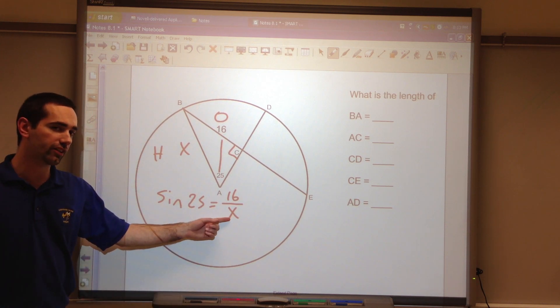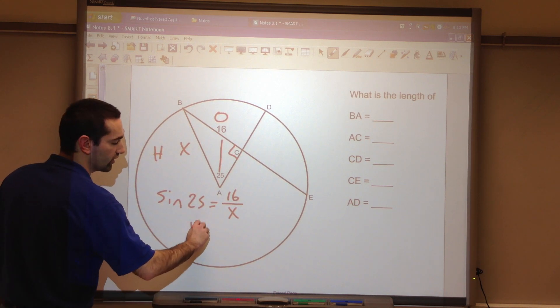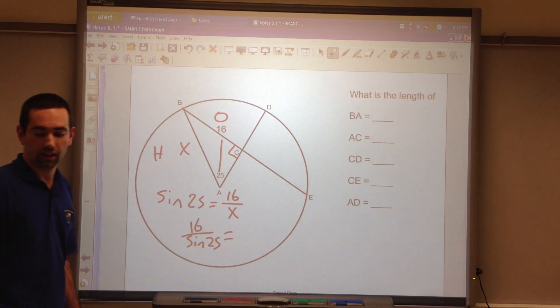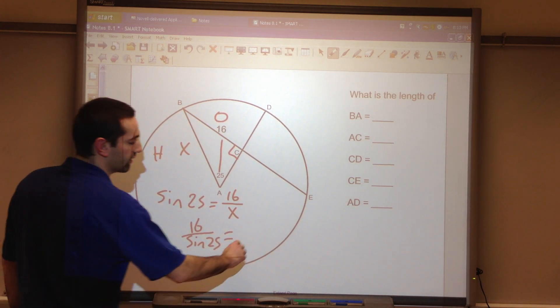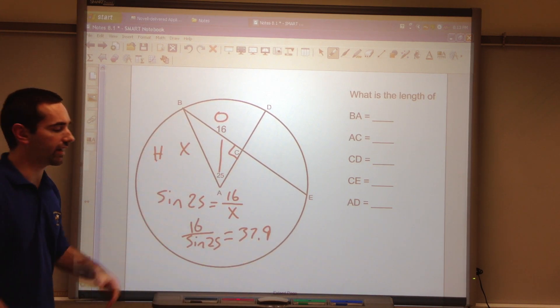I'm going to solve for X. X is the denominator. I'm going to divide. 16 divided by sine of 25. 16 divided by sine of 25 is 37.9. That's rounded. So now I know this length.